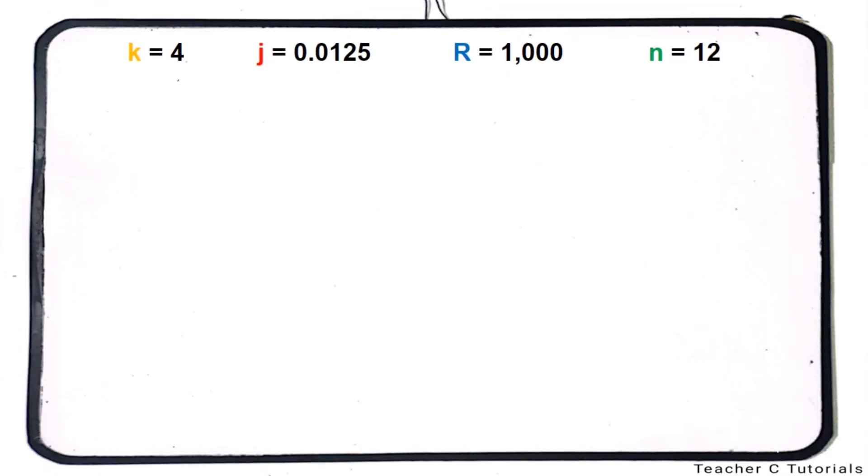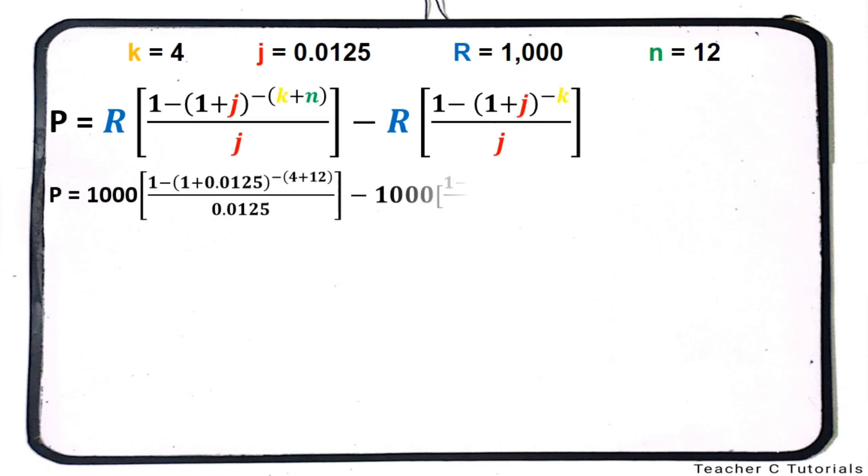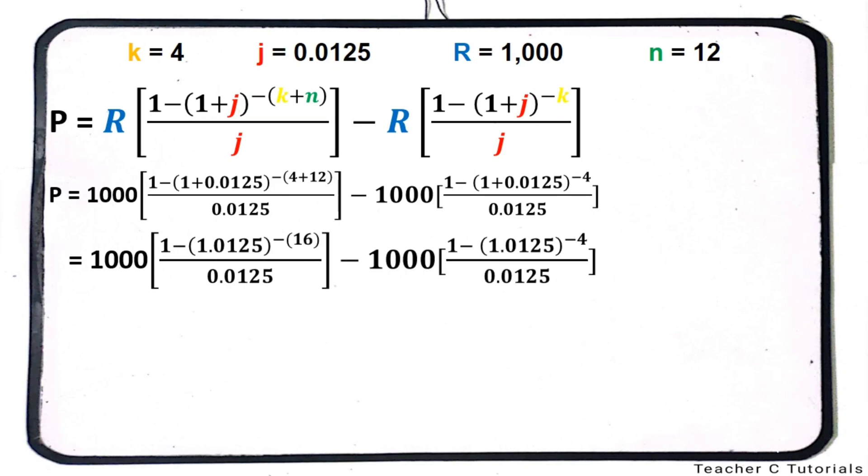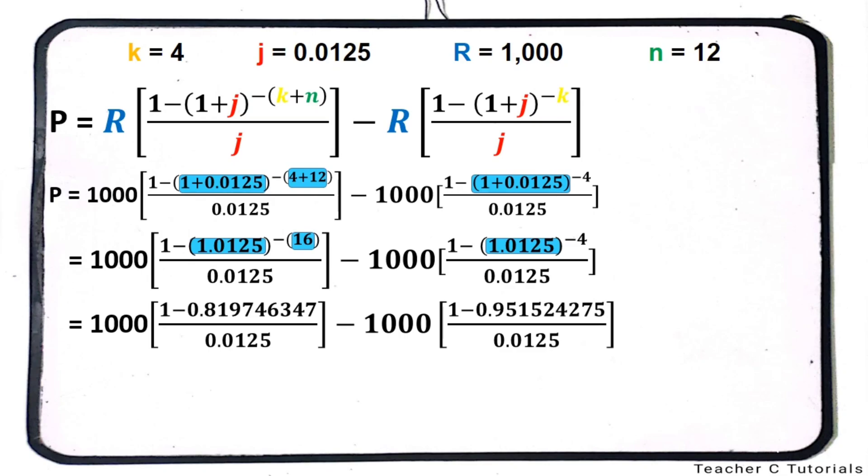After identifying the givens, let's proceed to solving. Substitute the givens to the formula. Let's start with the operations inside the parenthesis. 1 plus 0.0125 is 1.0125. 4 plus 12 is 16. Then another 1 plus 0.0125 is 1.0125.